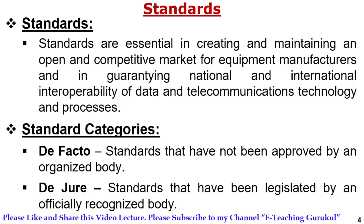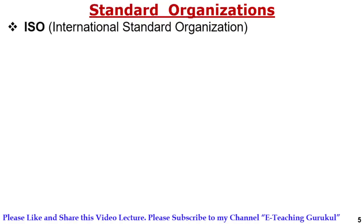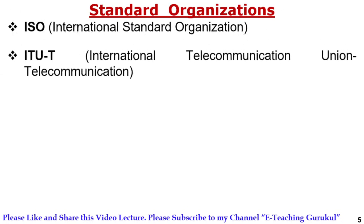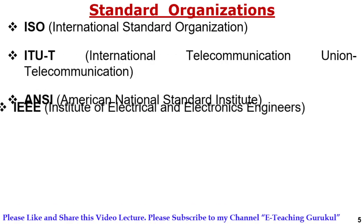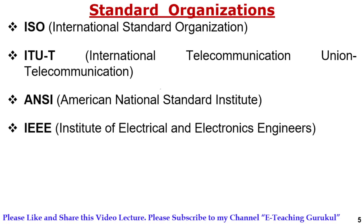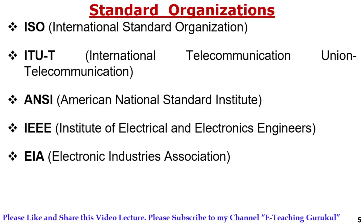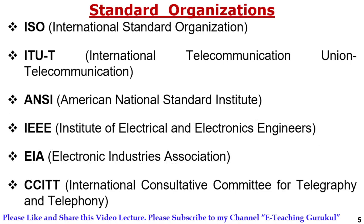Standard organizations for de jure standards include: ISO — International Standard Organization; ITU-T — International Telecommunication Union Telecommunication, basically used for cable purposes; ANSI — American National Standard Institute; IEEE — Institute of Electrical and Electronics Engineering; and EIA — Electronic Industry Association. These organizations approve proper protocols under the de jure category.